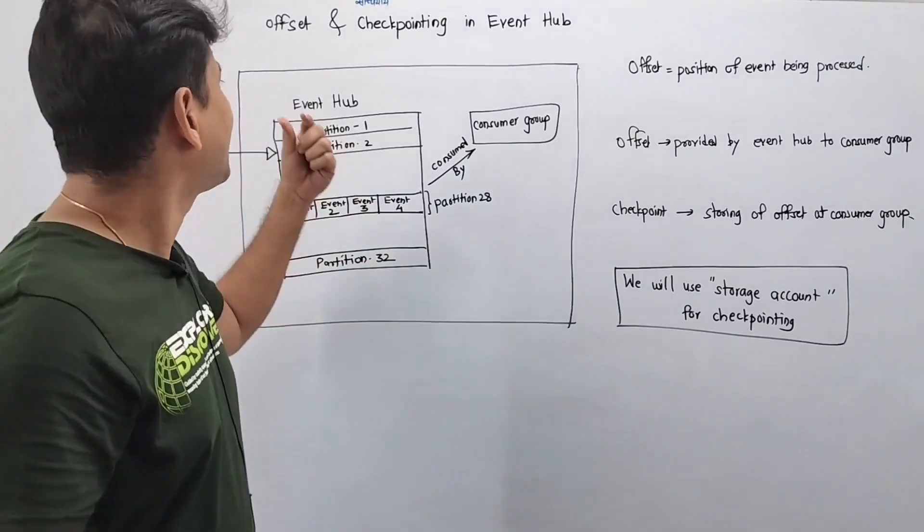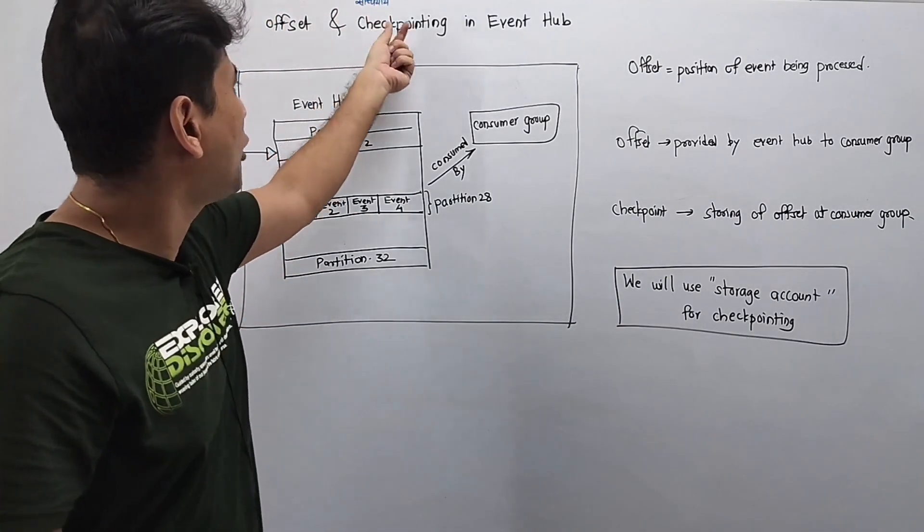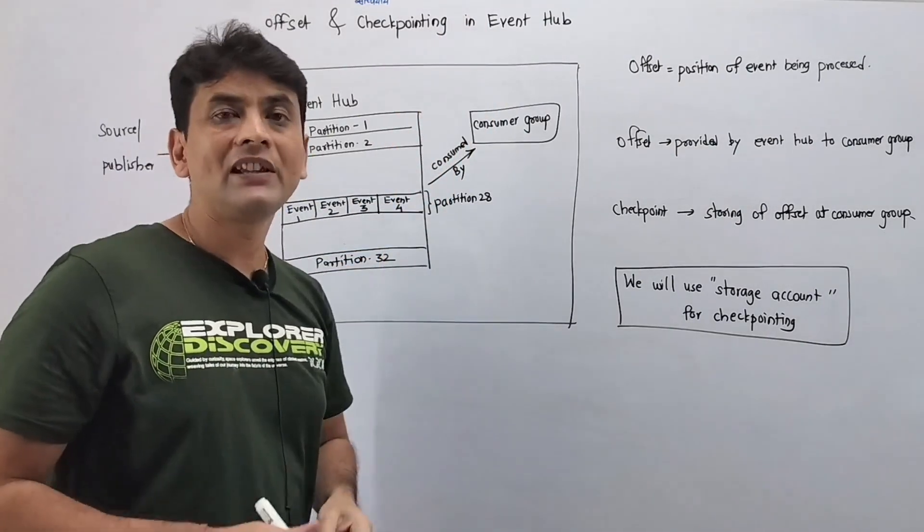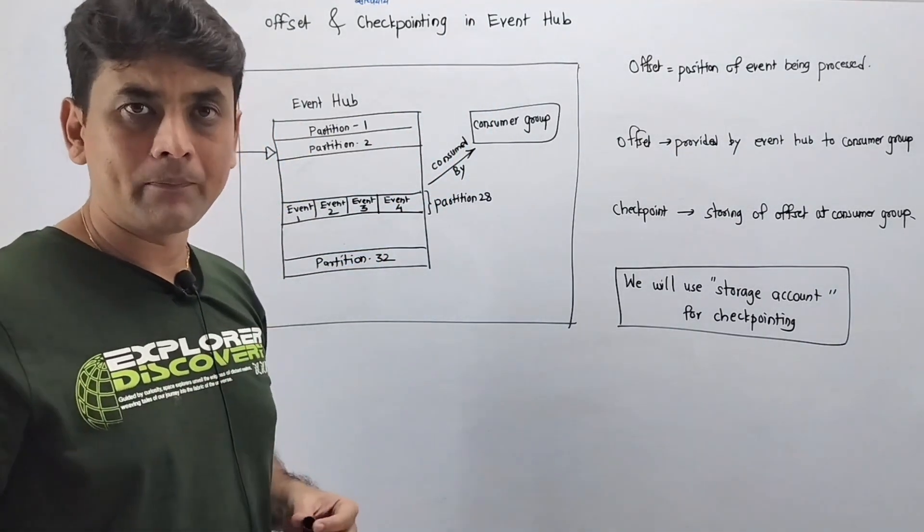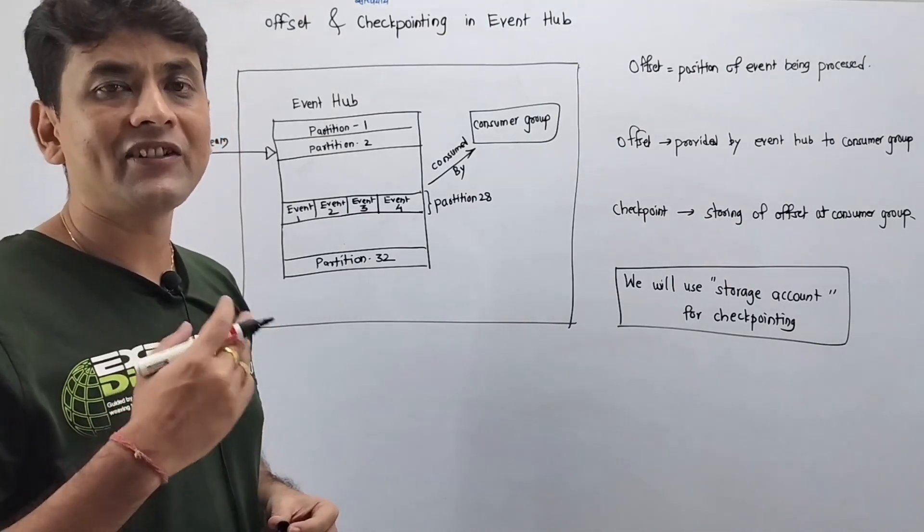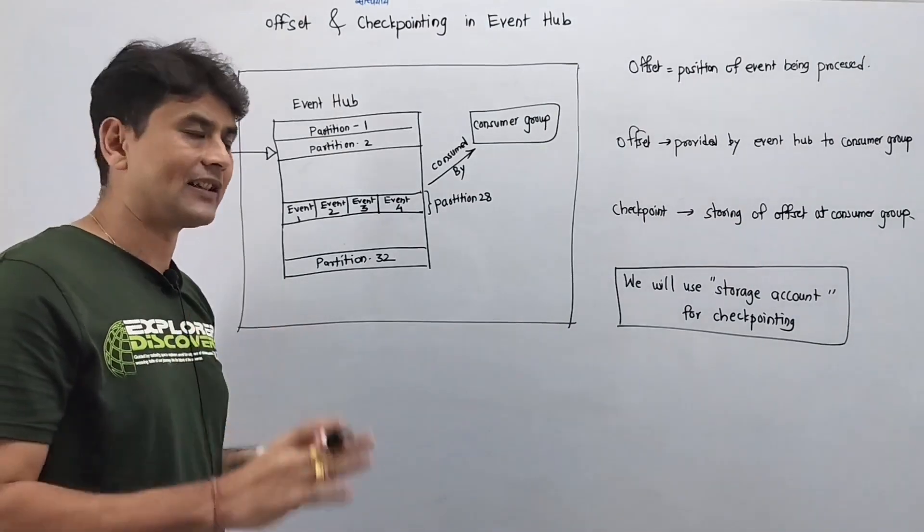Hello guys, in this video let's discuss offset and checkpointing in Event Hub. It looks like both of these concepts are the same, but there is a little difference. Let's try to understand it with an example.